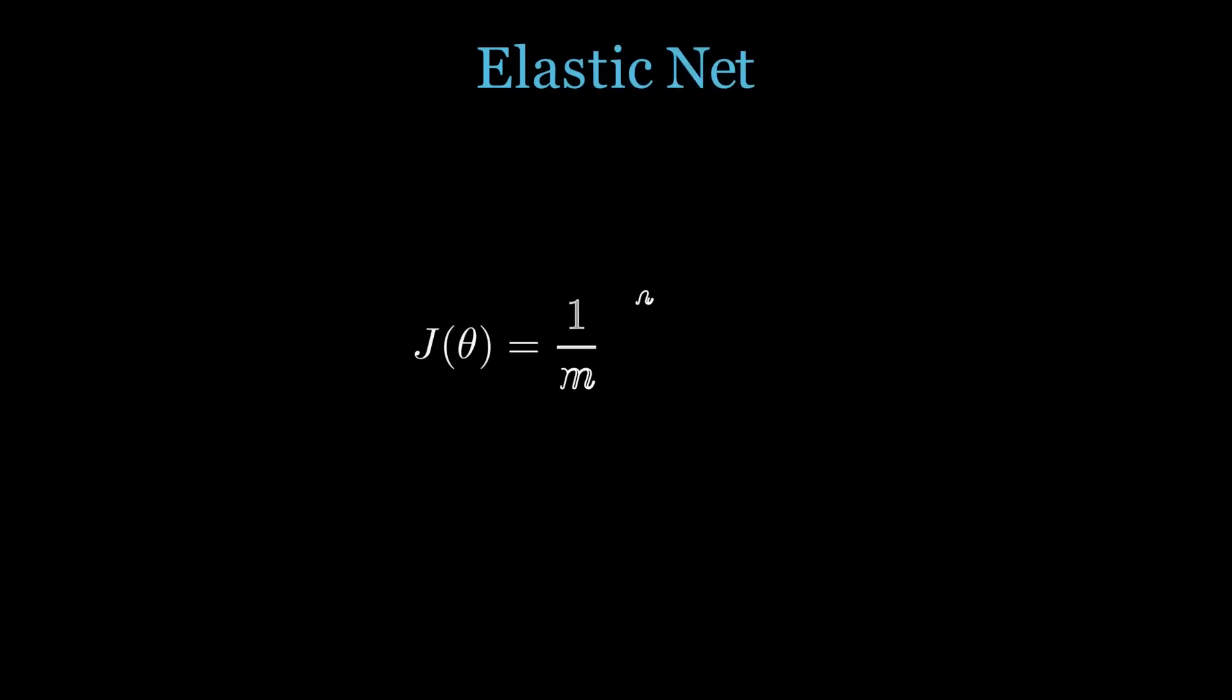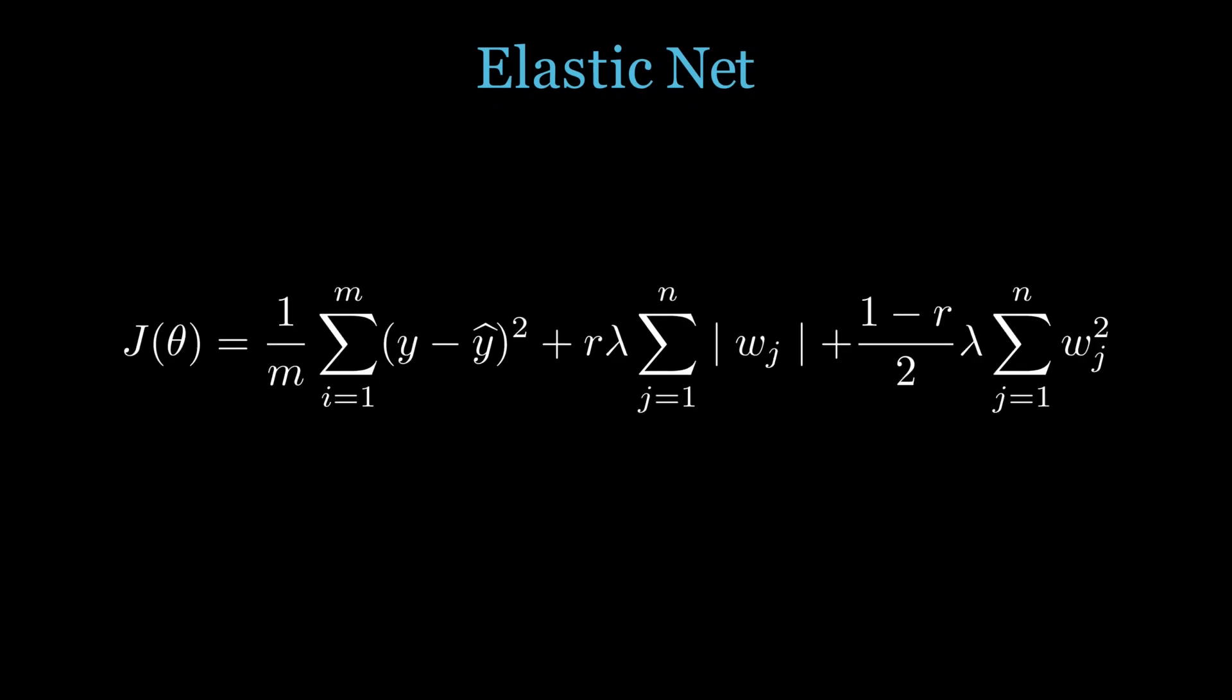Here comes the elastic net. Now we will again do the same thing, take the mean squared error loss function and then add it with both L1 and L2 regularization. But here we can see one more term which was not there in the previous equation. As I said, elastic net acts as both lasso and ridge and we can control this with a hyper parameter known as L1 ratio. When we write it mathematically we denote it as r. You can set a value of r anything between 0 to 1.